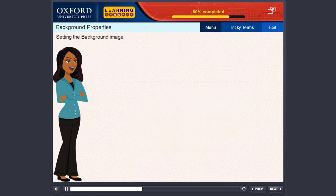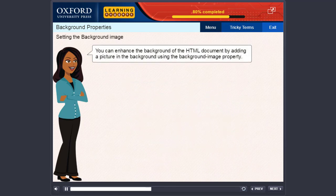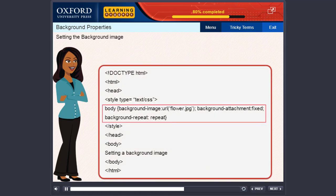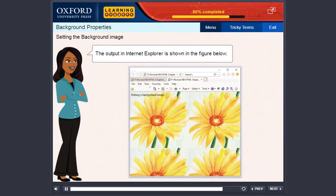Setting the background image. You can enhance the background of the HTML document by adding a picture in the background using the background image property. Consider the following HTML document. The background image flower.jpg is specified for the body element with the attachment property set to fixed and the repeat property set to repeat. The output in Internet Explorer is shown in the figure below.